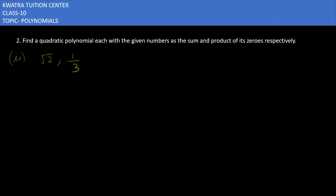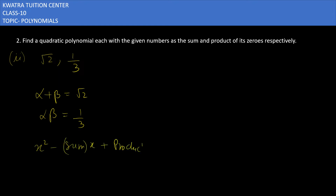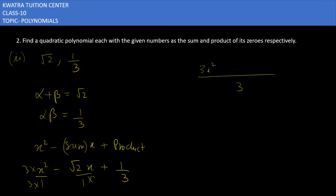Now the second one: find a quadratic polynomial where alpha plus beta is root 2 and alpha dot beta is 1/3. Using the formula x squared minus (sum)x plus product, we have x squared minus root 2 times x plus 1/3. Taking LCM as 3, the first term becomes 3x squared, the second term becomes 3 root 2x, and the last term is 1. Ignoring the denominator, the polynomial is 3x squared minus 3 root 2x plus 1.